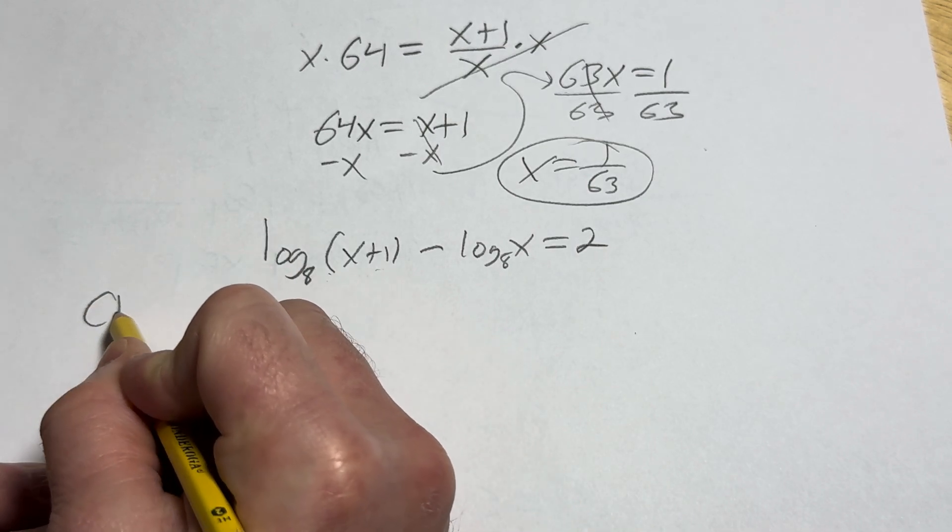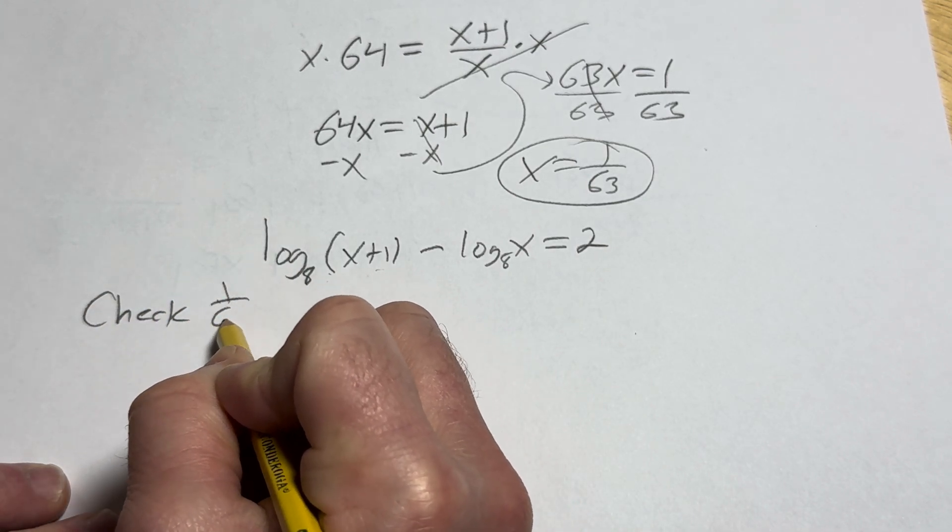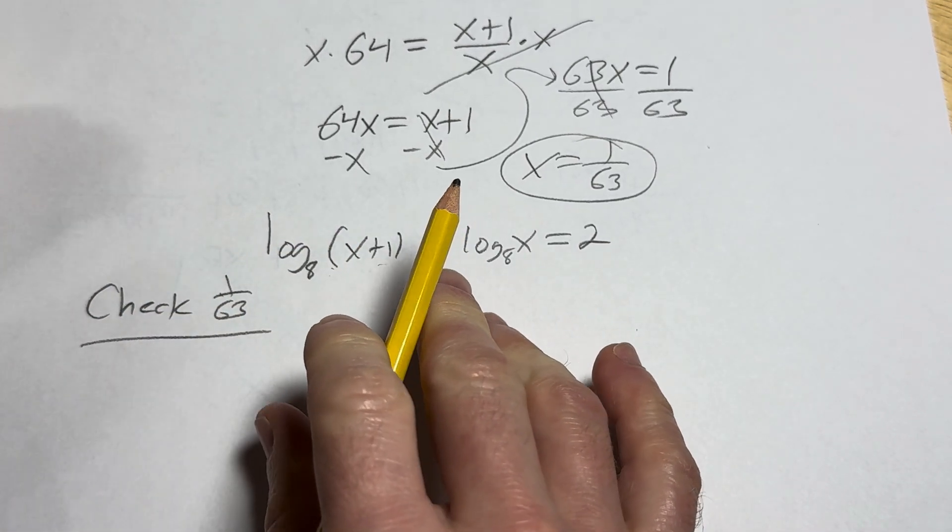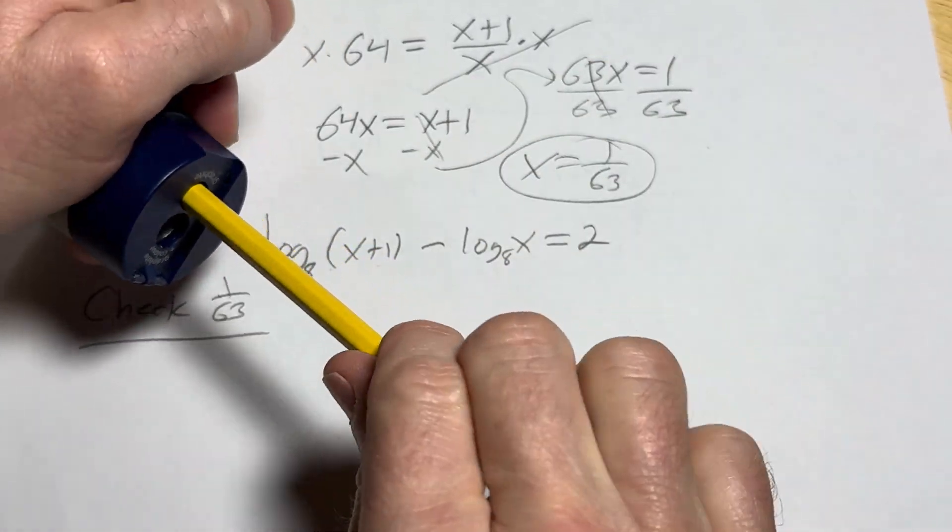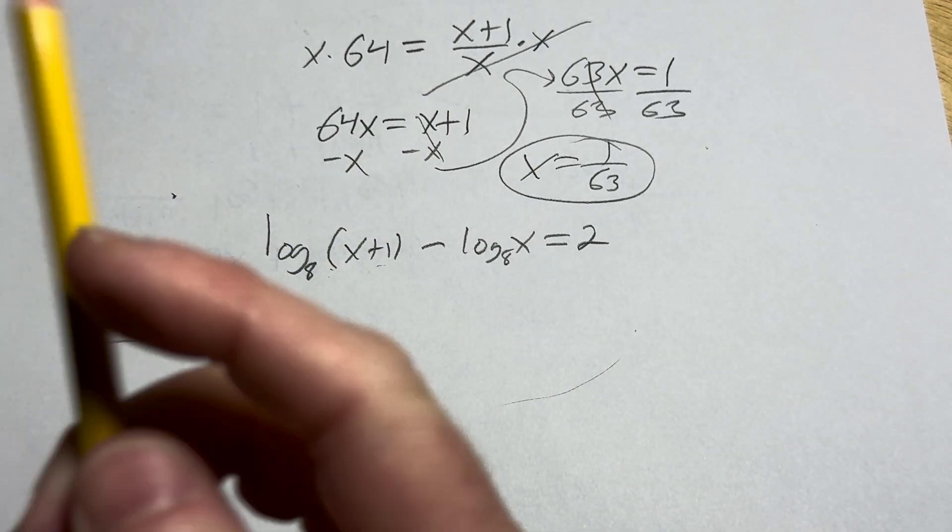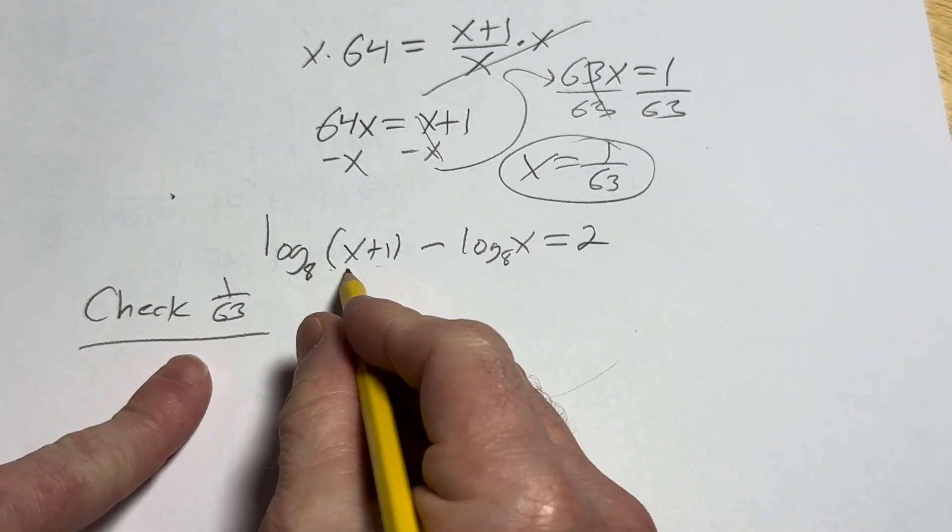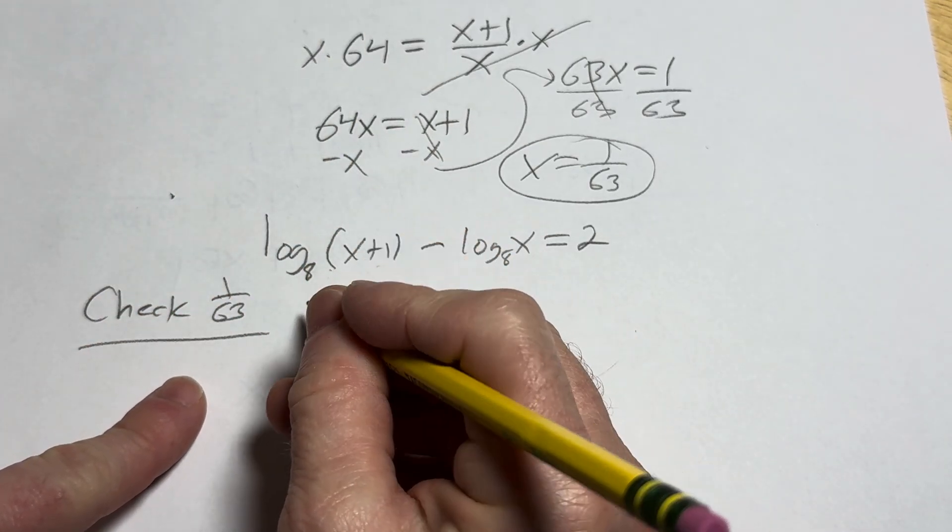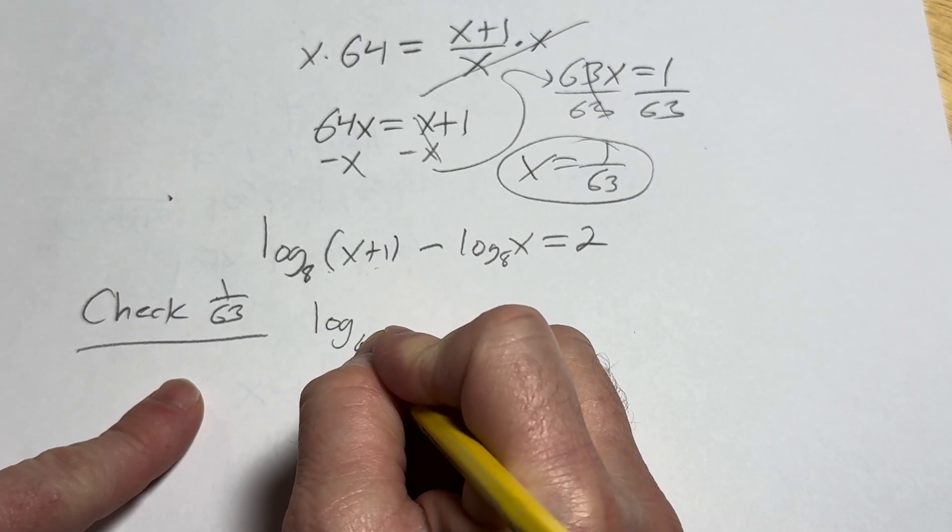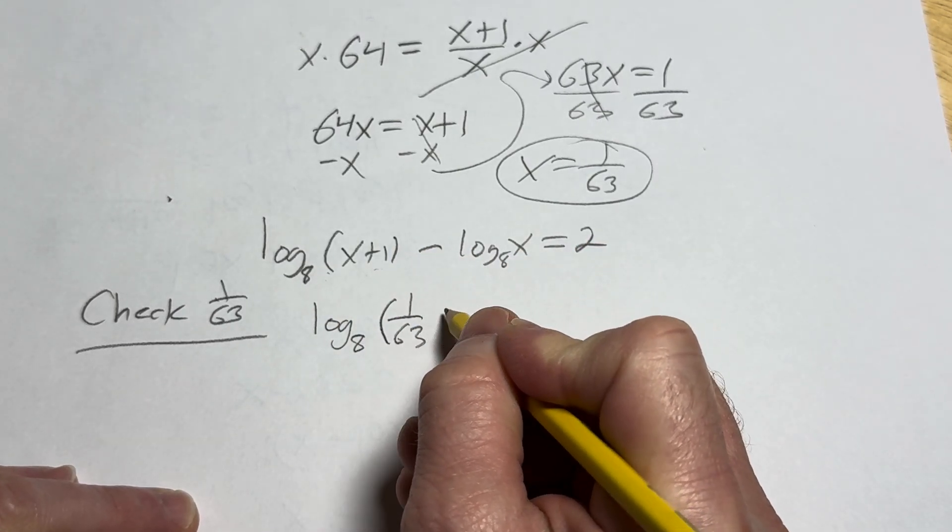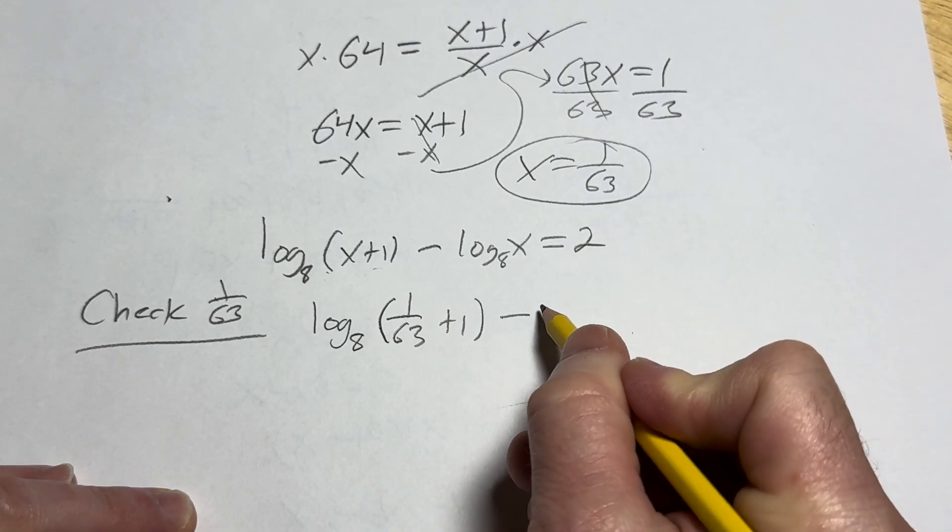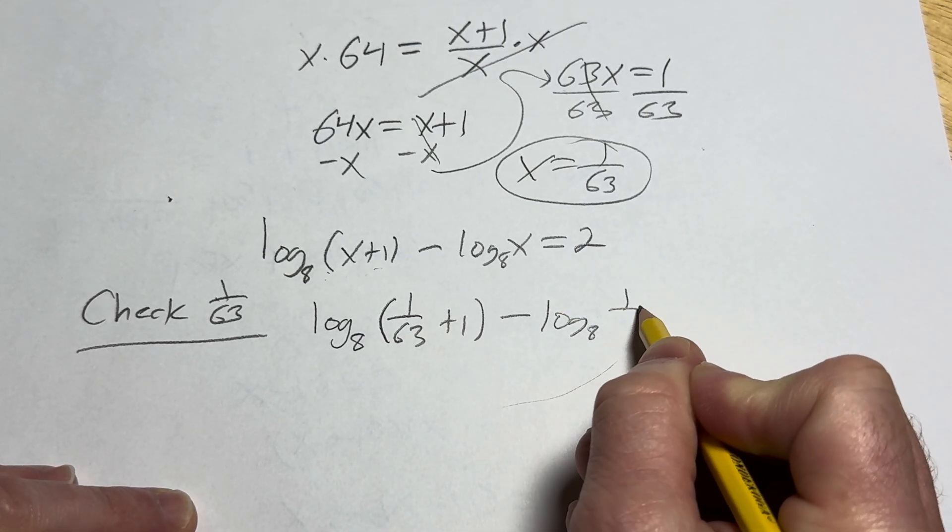So checking 1 over 63. I'm writing that down. Just if you're doing this for like a classroom or something, you want to let the reader know what you're doing. All right. So plugging in 1 over 63 for all of the x's gives us log base 8 of 1 over 63 plus 1 minus log base 8 of 1 over 63.